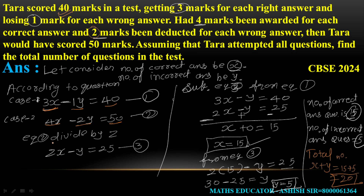Equation 2 को simplify किया, divide by 2 करके 2X - Y = 25 (Equation 3) मिला। Equation 1 में से Equation 3 subtract किया: 3X - 2X = X, -Y + Y cancel, 40 - 25 = 15। तो X = 15। Y की value: 2(15) - Y = 25, तो 30 - 25 = Y = 5। Total number of questions = X + Y = 15 + 5 = 20 questions।